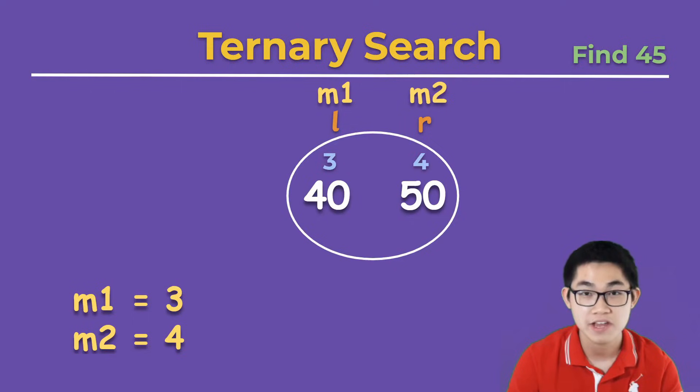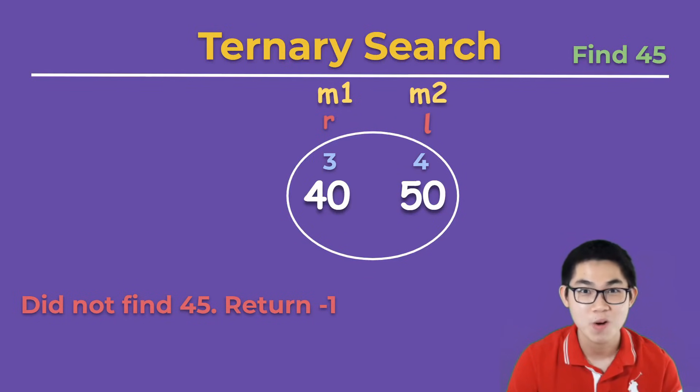So we move l over here, and then move r over here. Now, when r is to the left of l, this indicates that 45 does not exist inside the array. So you either return false or minus 1.